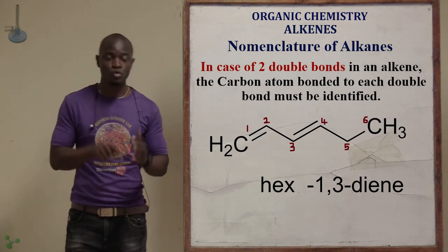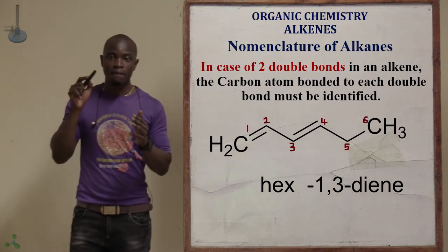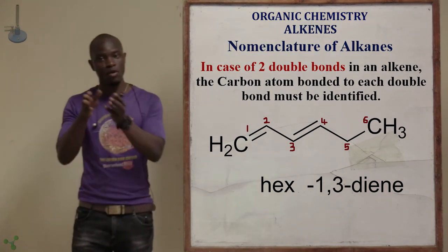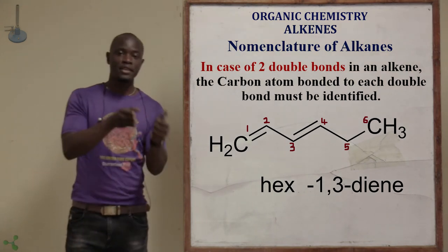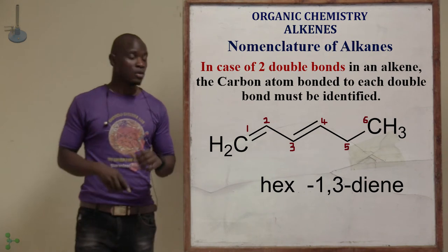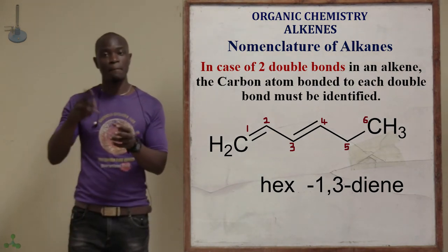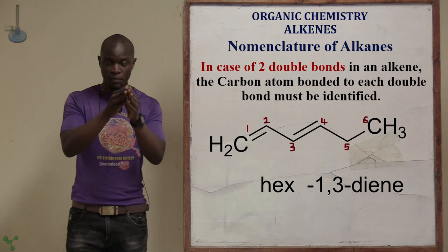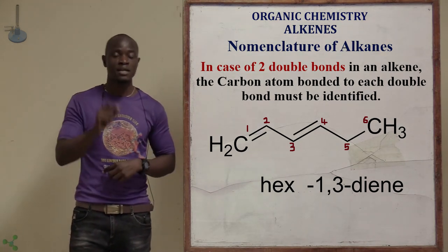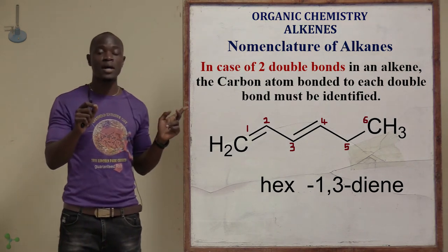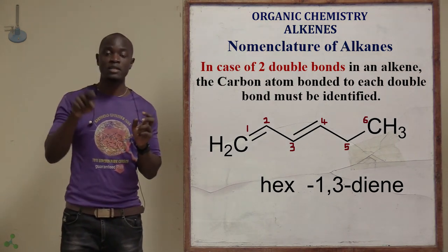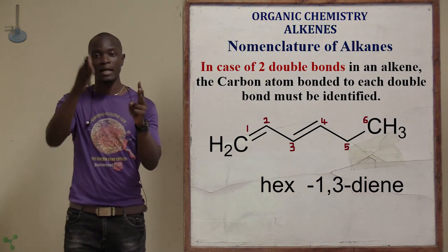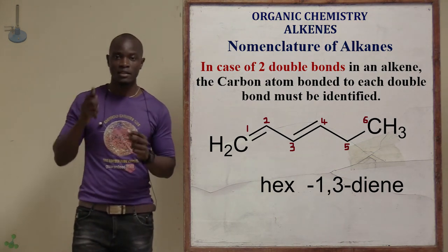Di- means two, tri- means three, tetra- means four, pent- means five, hex- means six. For hex-1,3-diene: hex represents the six-carbon chain, 1 and 3 indicate the positions of the two double bonds, and di-ene indicates two double bonds.